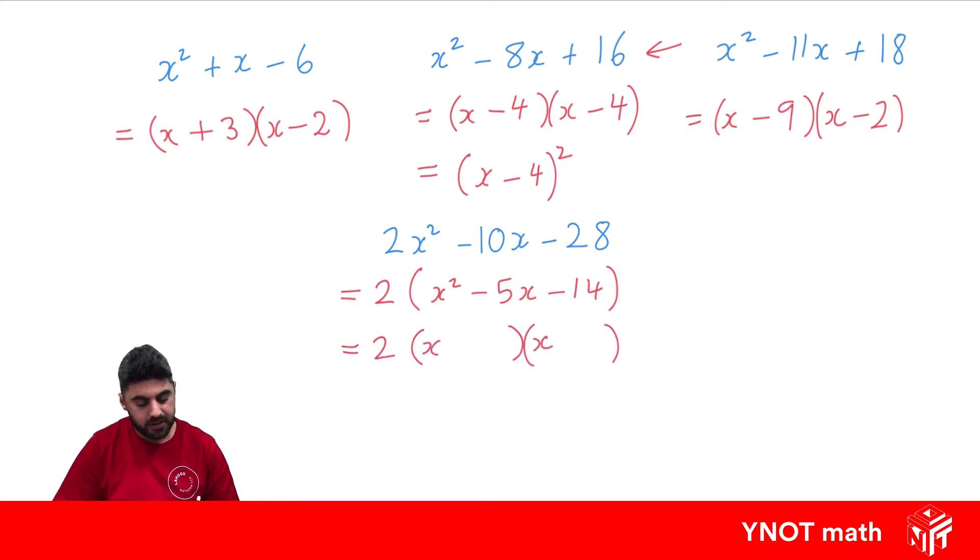We're looking for two numbers that multiply to -14 and sum up to -5. So that's going to be -7 and +2.